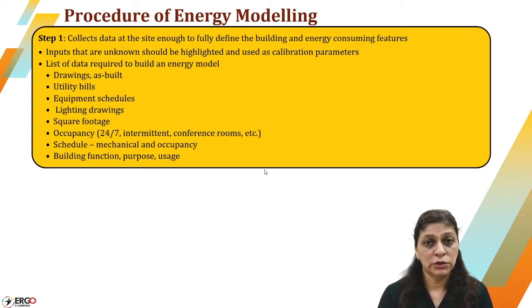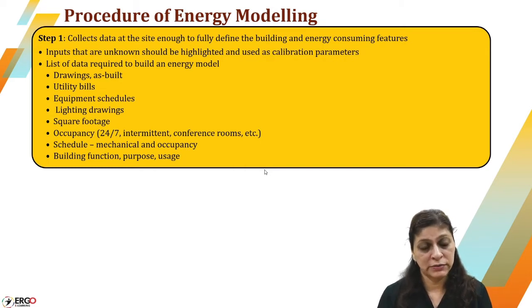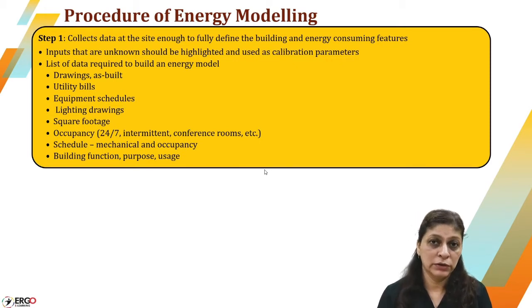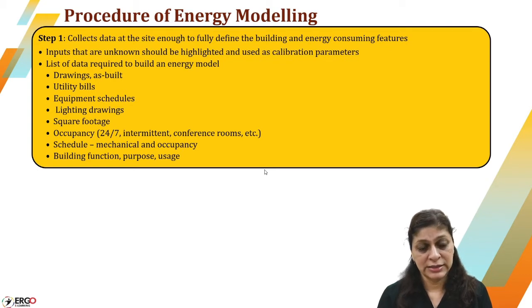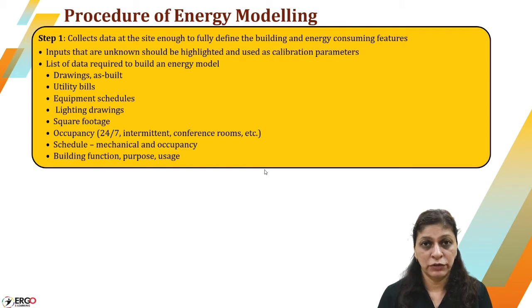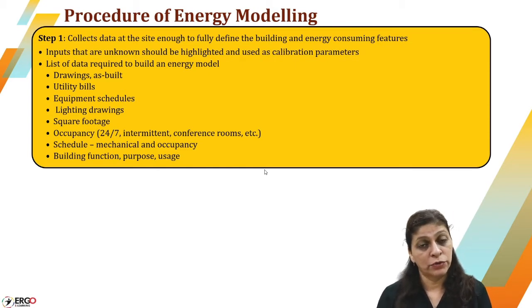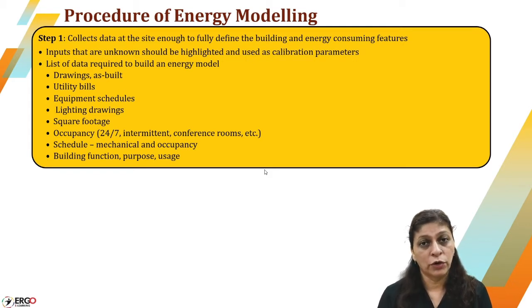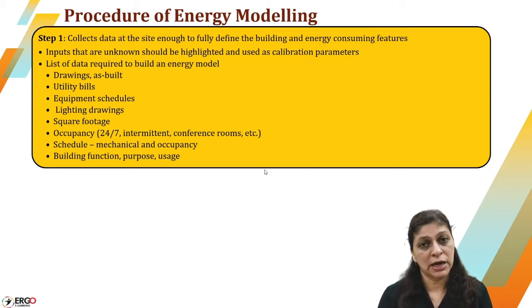Data gathering starts with drawings of the actually built building, utility bills of electricity as well as gas, then equipment schedule — when and in which pattern they are going to operate — lighting drawings and lighting density details, the square footage information of each part of the building, what is the occupancy of the building, type of occupancy, nature of use, schedule of occupancy, and building functions as well as purpose.